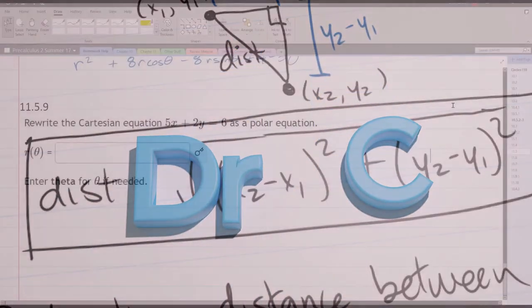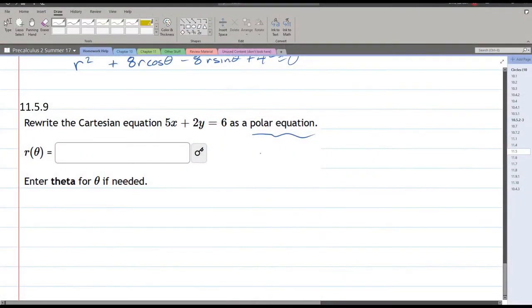Here's a Cartesian equation, and we're supposed to write it as a polar equation, so that's an equation in r and theta. We're taking x's and y's, turning them into r's and theta's.